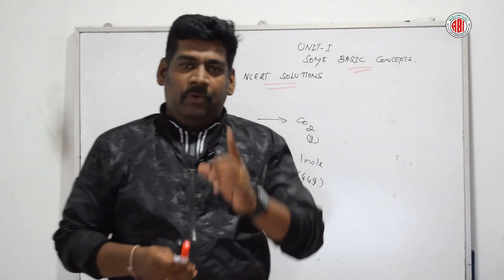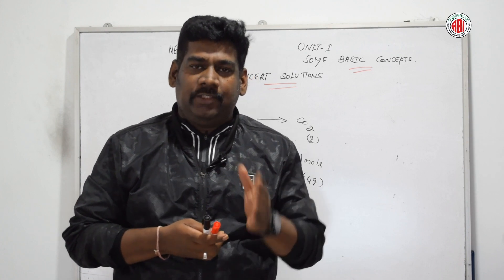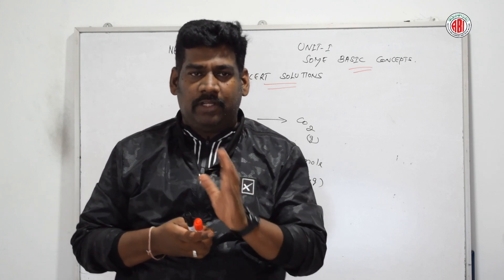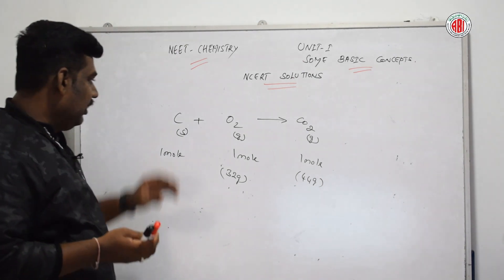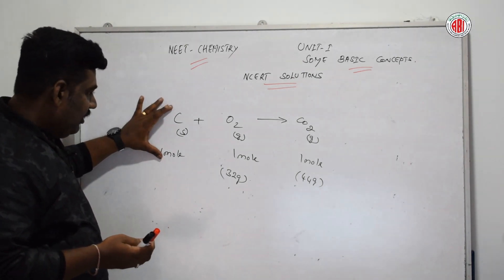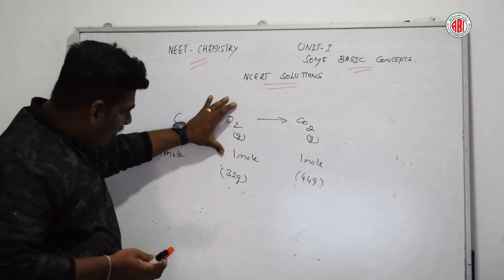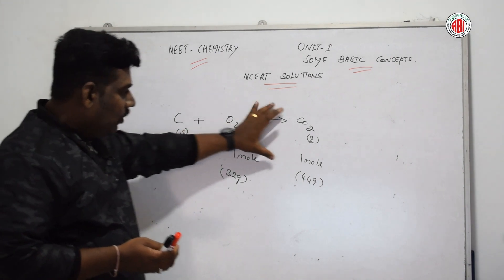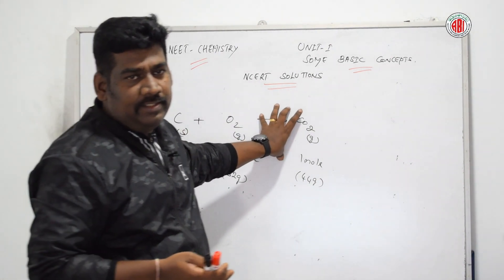For the first question: one mole of carbon burns with one mole of oxygen to form one mole of carbon dioxide.